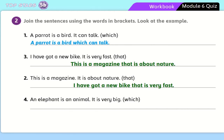An elephant is an animal. Remove the full stop, remove 'it', and put 'which' instead as a joining word. An elephant is an animal which is very big.